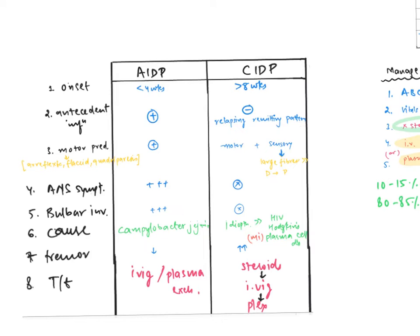Talking about the third point, motor predominant. I have told you that demyelinating disorder affects motor more than sensory. AIDP is motor predominant, but in chronic CIDP we will get more sensory findings. Motor findings include areflexia, flaccidity, quadriparesis. In CIDP, large sensory fibers are involved, and we get different problems like distal to proximal weakness presentation.